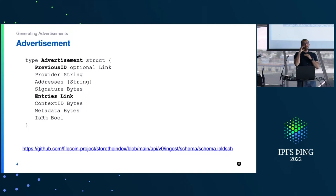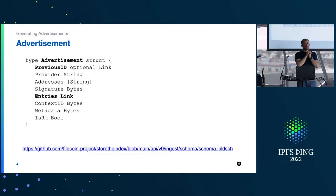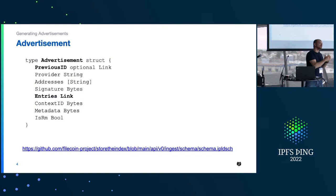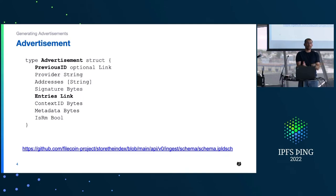An advertisement is a piece of information that contains a link to the previous advertisement, the provider ID, addresses where you can contact the provider — from which you can construct something like an AddrInfo — a signature that verifies it's actually the provider that produced the record, links to entries, a context ID, metadata, and a boolean indicating whether this advertisement is about removing or adding content. Every data structure here is IPLD — we use IPLD wherever we can, and everything has IPLD schemas linked at the bottom of the screen.